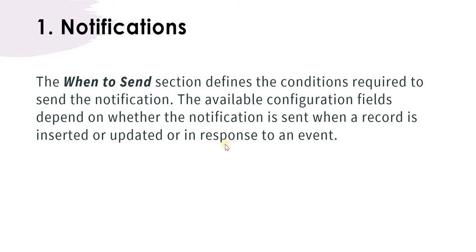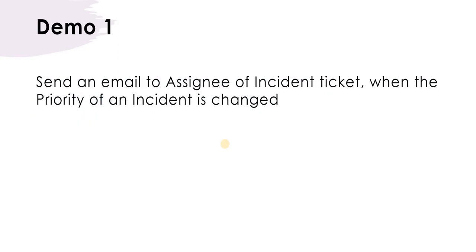We will see this in a demo. In the demo, what we will be doing is send an email to the assignee of the incident ticket when the priority of an incident is changed. So as soon as the priority of an existing ticket is changed, we will send an email to the assignee of the ticket that the priority of this particular incident number has changed. Let's quickly jump to ServiceNow and create a notification for this.